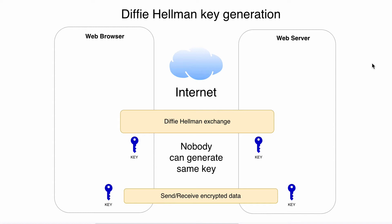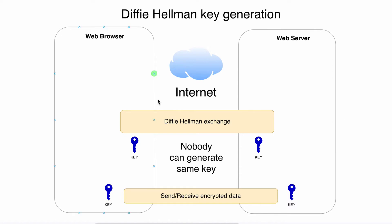Now it's finally time to talk about the Diffie-Hellman key generation algorithm. This algorithm was developed in 1976 by two people and named after them — Diffie and Hellman. It allows you to generate keys over an insecure public connection, and in this and the next lectures I'll explain how this happens.